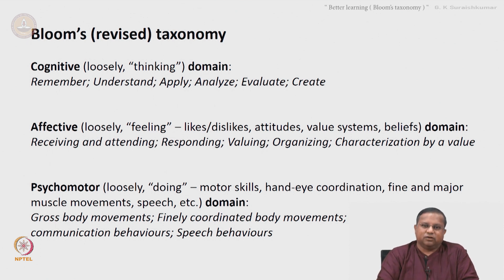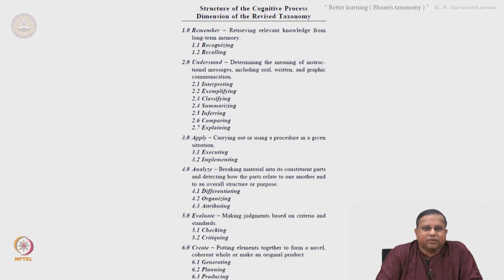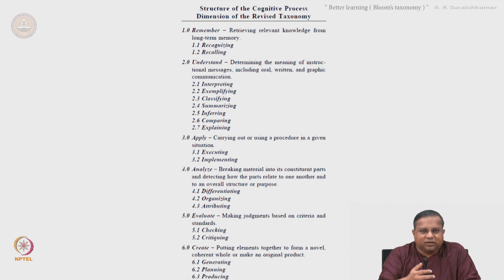This is the table from the Krathwohl 2002 paper showing the structure of the cognitive process. The first level is remember, which means retrieving relevant knowledge from long-term memory, such as recognizing and recalling. The second level is understand — determining the meaning of instructional messages including oral, written, and graphic communications. Examples include interpreting, exemplifying, classifying, summarizing, inferring, comparing, and explaining.